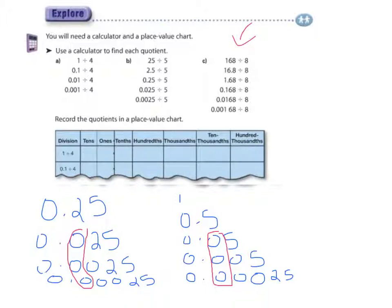Let's give it a go. So, 168 divided by 8 gives us 21. 16.8 divided by 8 gives us 2.1. Notice I've moved my decimal 1 place over. 1.68 divided by 8 gives us 0.21. So, again, I've moved it another place over now.